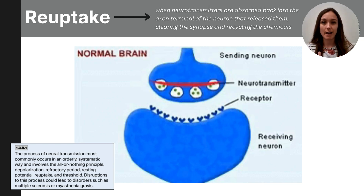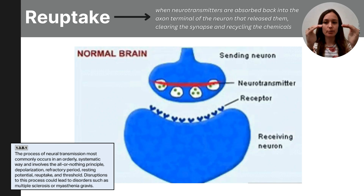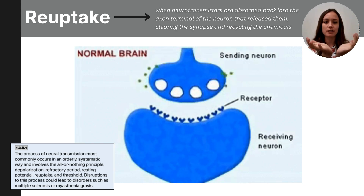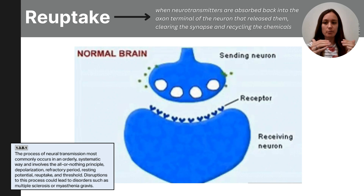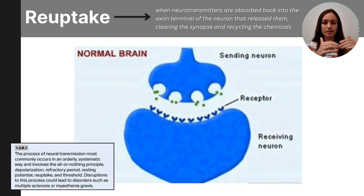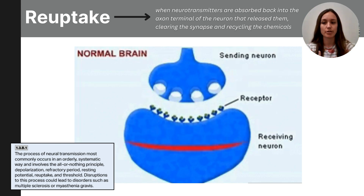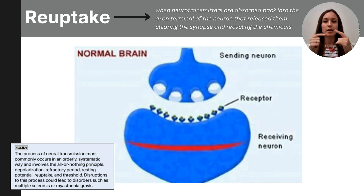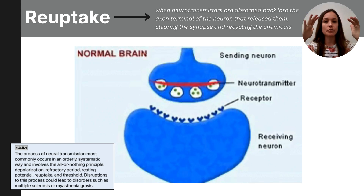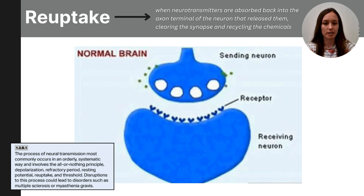The last step in the process is called reuptake. After the neurotransmitters bind at the receptor sites of the next neuron and the message is sent, those neurotransmitters are reabsorbed into the original sending neuron through reuptake, allowing them to be reused for future messages. Any remaining neurotransmitters in the synapse are then cleaned up by glial cells or broken down by enzymes.